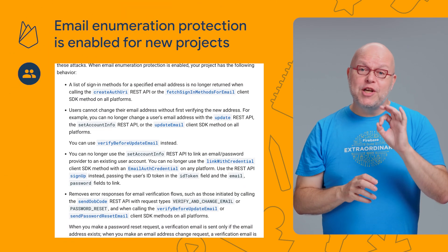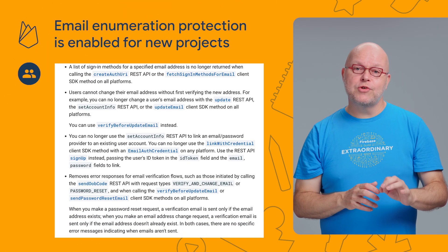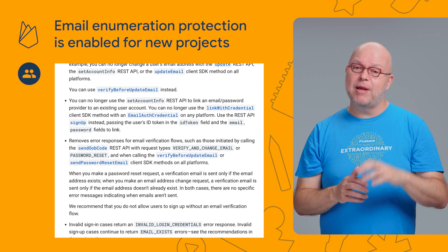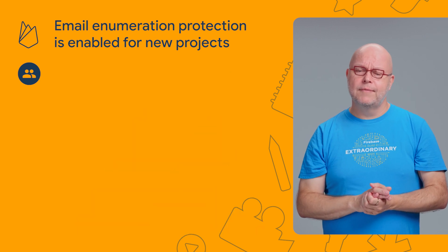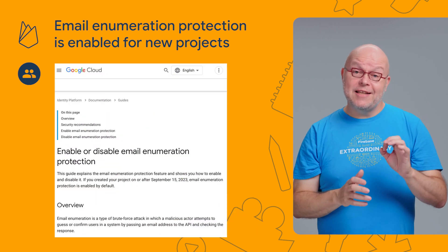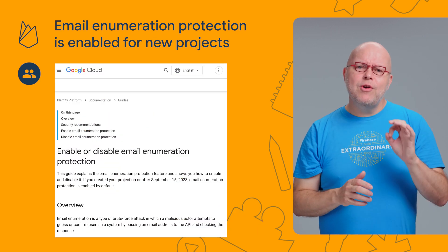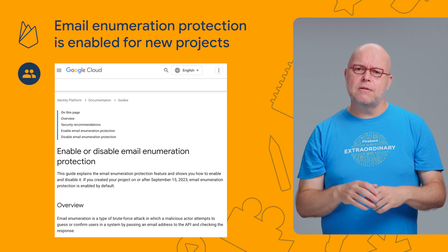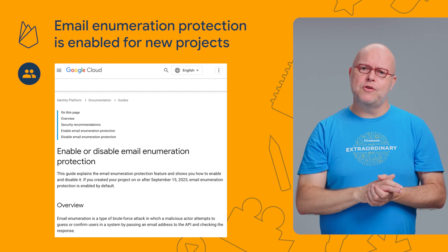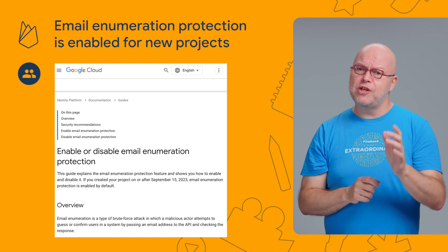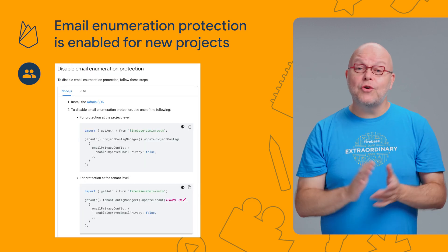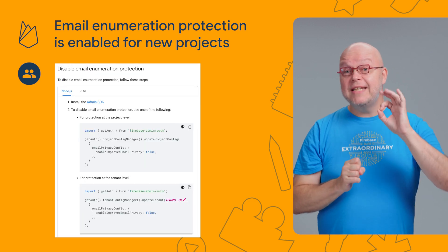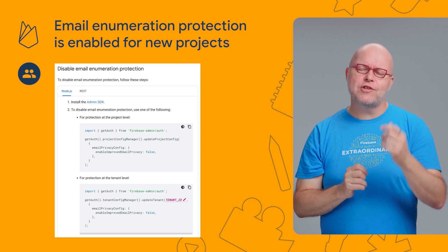Firebase Authentication's Email Enumeration Protection makes it harder for malicious users to find out what email addresses exist in your project, by changing the responses of some APIs and disabling other APIs completely. For Firebase projects created since September 15th, this Email Enumeration Protection is enabled by default. Since this changes the behavior of existing APIs, your existing code may behave differently on these new projects, so be prepared to update your code. Check the documentation on email enumeration protection linked below, which also shows you how to disable the protection so that the API reverts to its previous behavior.